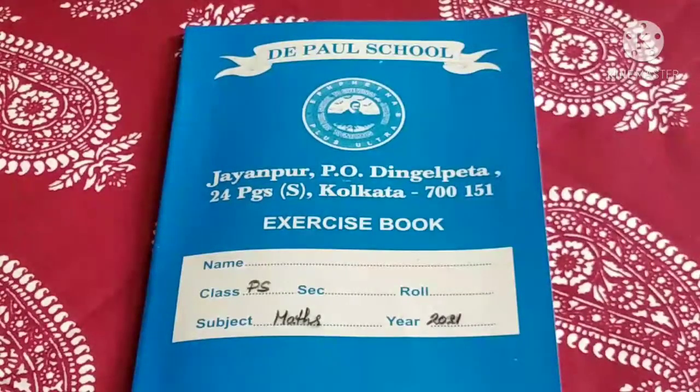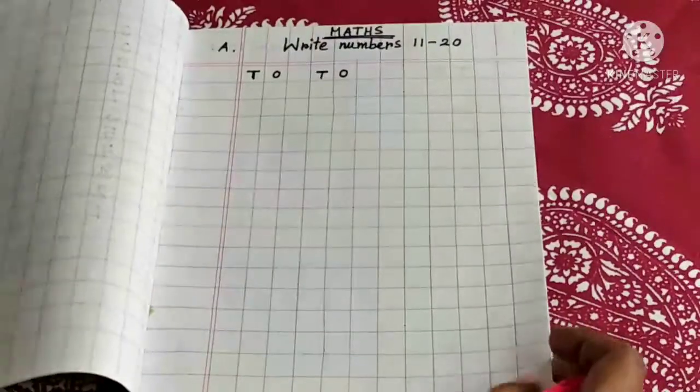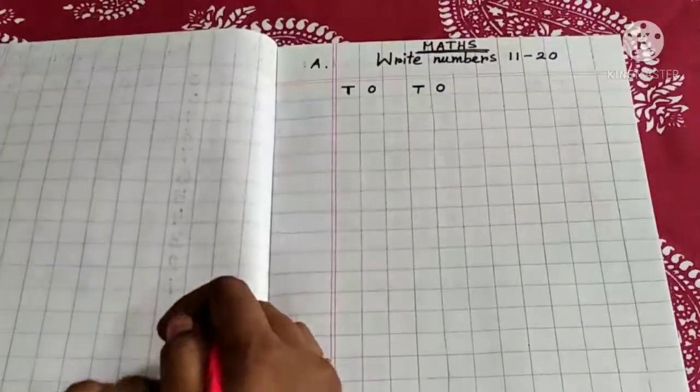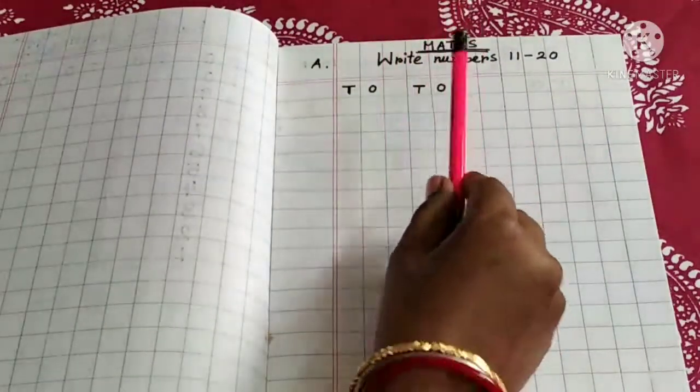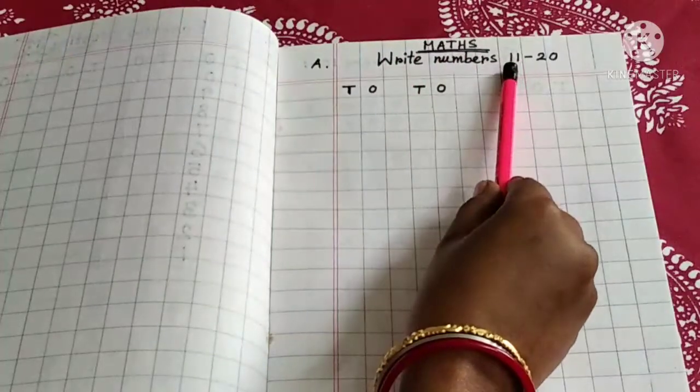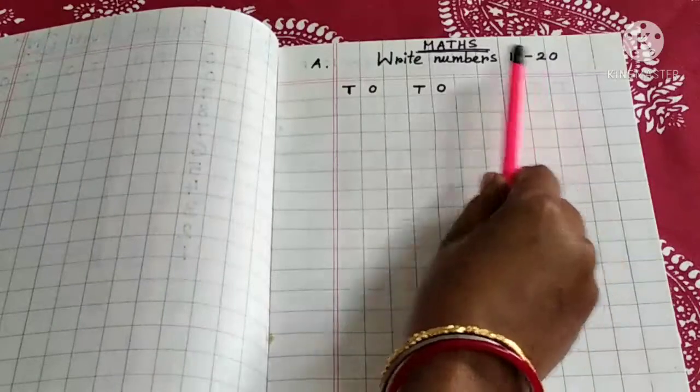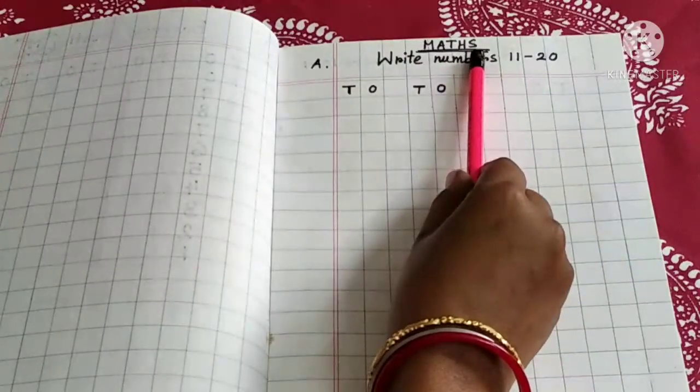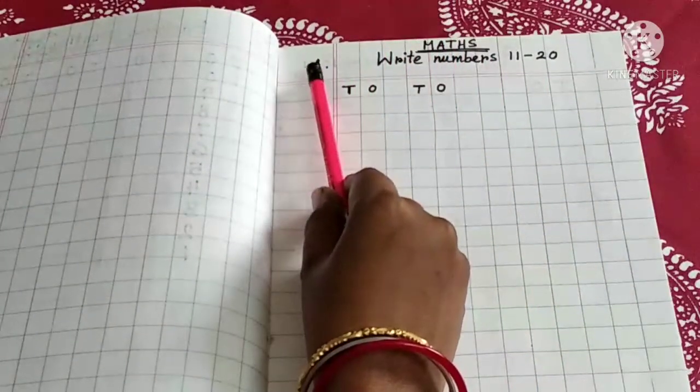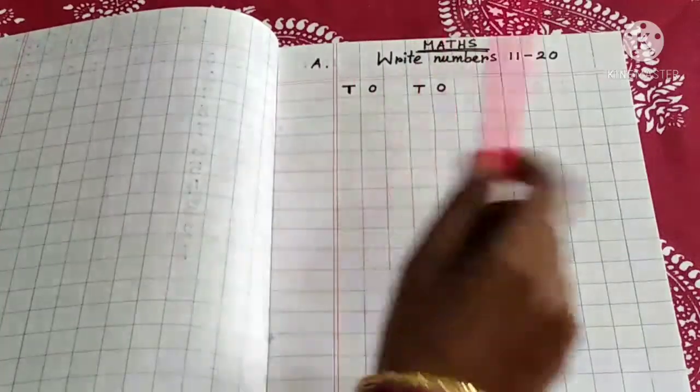Children, open your maths copy and look at here. The first one is you need to write the numbers 11 to 20. And put the heading, maths number A. Okay?